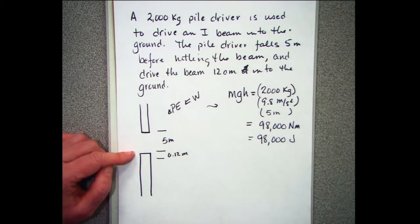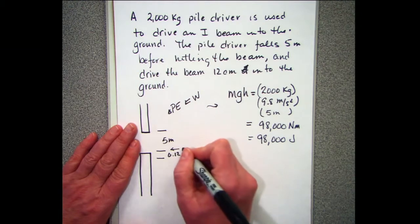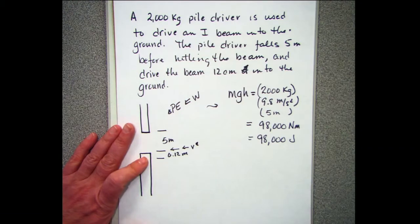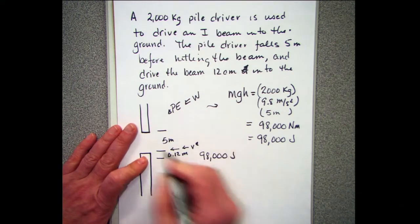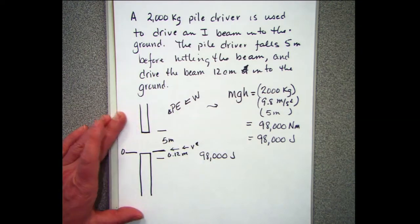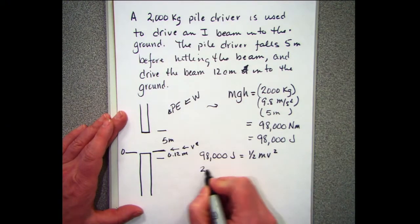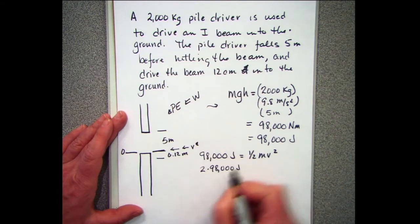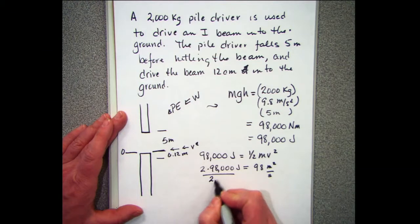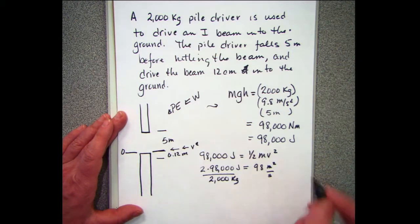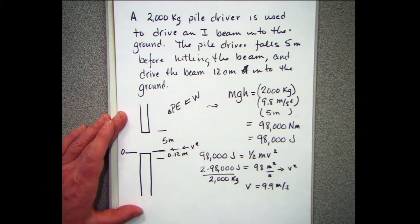The work done is pushing the bottom beam into the ground. One thing we want to find is the velocity just as it hits the beam. We know 98,000 joules equals ½mv², so v² = 2 × 98,000 / 2,000 = 98 m²/s², giving us v = 9.9 meters per second.